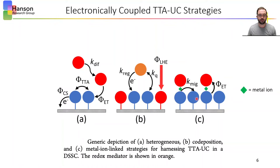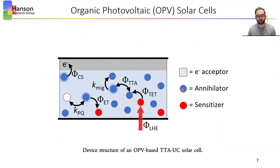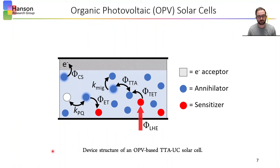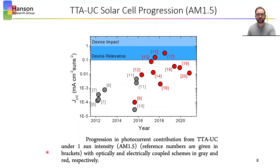The final strategy developed was through metal ion linked multilayer assemblies on the surface, overcoming both the diffusion limitations of the heterogeneous strategy and allowing for a greater concentration or surface coverage of sensitizer-annihilator pairs compared to the co-deposition strategy. One final example of harnessing TTA-UC in a solar cell was done in organic photovoltaics, or OPVs, in 2017, which doped sensitizers into the annihilator layer. This example did facilitate TTA-UC but the resulting photocurrent was relatively low compared to previous examples. While there are some disadvantages to this strategy and much room for improvement, this architecture has some notable advantages as well, both of which are outlined in the paper.